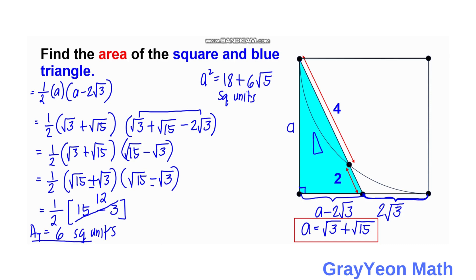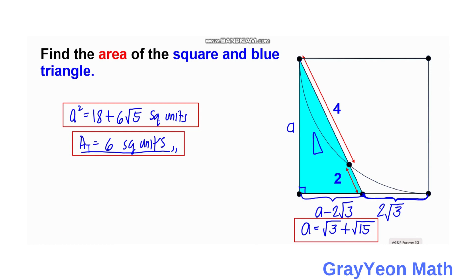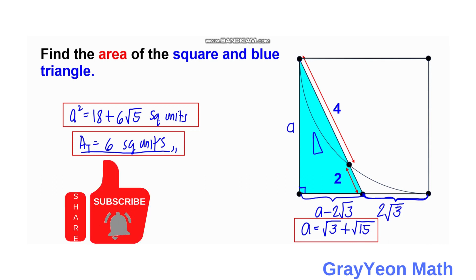Summarizing our answers: the area of the square is 18 + 6√5 square units, while the area of the triangle is 6 square units. Thank you for watching until the end of the video. Please like the video if you like our solution, and don't forget to subscribe to the channel and hit the bell icon so you will be updated for more math videos like this.